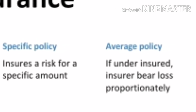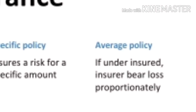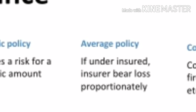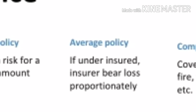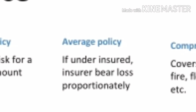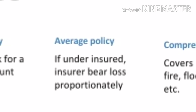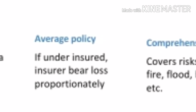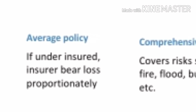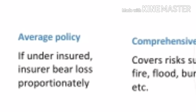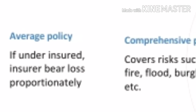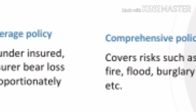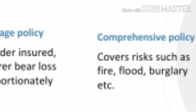Next is average policy. Under this, the average clause will be applicable. If your property is underinsured — that means the value of insurance is less than the value of the property — the insurance company will admit claims proportionately. For example, you have a property worth Rs 1 lakh and you insured that property for Rs 50,000. If you incur a loss of Rs 10,000 and approach your insurance company for reimbursement, then the insurance company will admit claims only for Rs 5,000 because of the average clause.